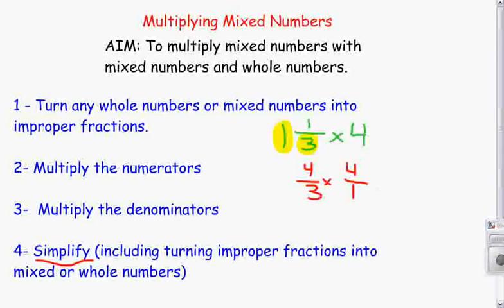We have an improper fraction, so we're ready to work. Now, once again, knowing what I already know with multiplying fractions, all I need to do is multiply numerator times numerator. 4 times 4 gives me 16. And denominator times denominator. 3 times 1 gives me 3.